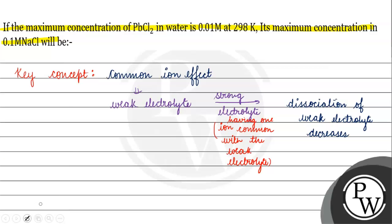Now, let's try to solve this question. When we have PbCl2 dissolved in water, our dissociation gives Pb2+ and 2Cl-.